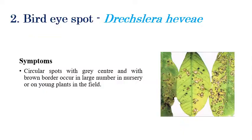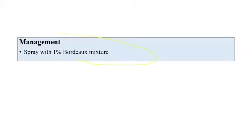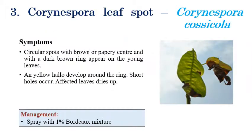The next disease is Bird Eye Spot, caused by Pestalotiopsis heveae. The name itself indicates the spots look like a bird's eye. Circular to irregular spots with grayish margins can be seen. This disease is mostly observed in nursery plants. In later stages it covers the entire leaf, resembling a bird's eye. Spraying of 1 percent Bordeaux mixture is recommended for management.